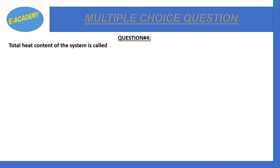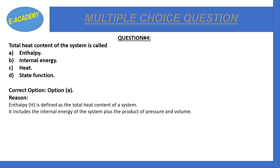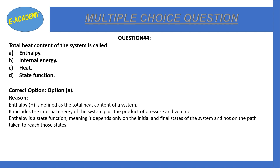Question number four: Total heat content of a system is called — enthalpy, internal energy, heat, or state function. Enthalpy is defined as the total heat content of a system, which includes internal energy plus the product of pressure and volume. Enthalpy is a state function, meaning it depends only on the initial and final states of the system, not on the path taken.